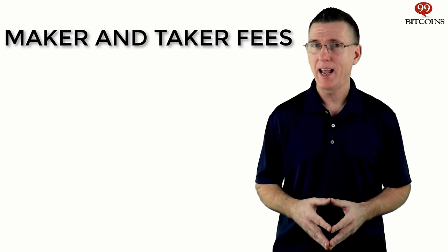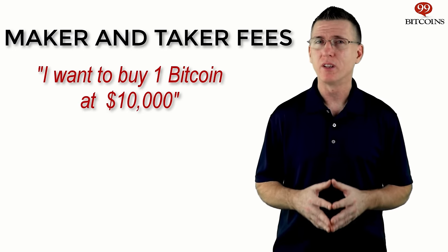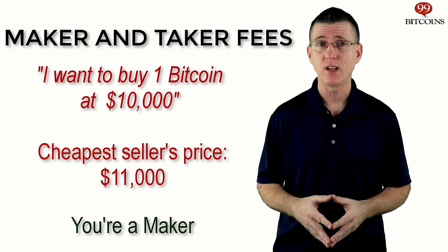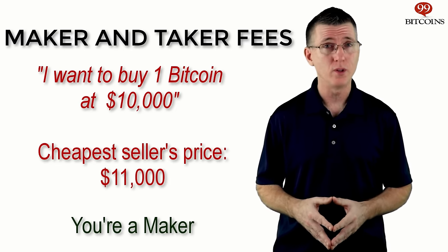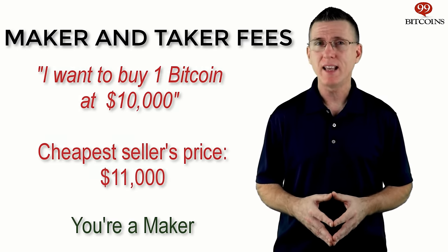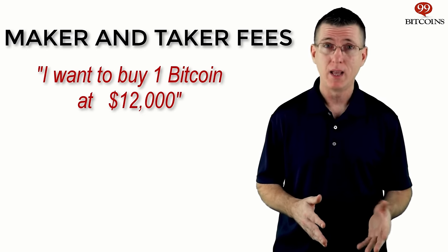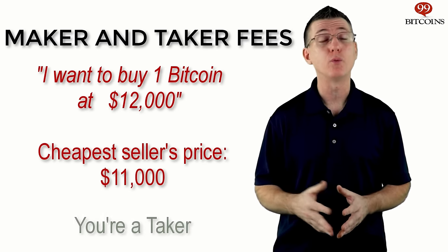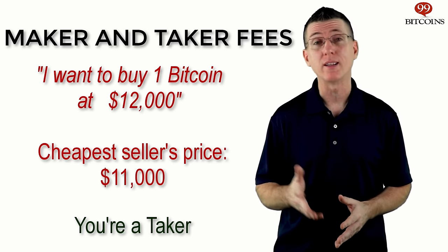For example, perhaps you put a limit order in to buy one Bitcoin at $10,000 at most, but the lowest seller is only willing to sell at $11,000. Then you've just created a new market for sellers who want to sell at $10,000. So whenever you place a buy order below the market price or a sell order above the market price, you become a market maker. Using that same example, if you place a limit order to buy one Bitcoin at $12,000 and the lowest seller is selling at $11,000, your order will be instantly fulfilled — you will be removing orders from the exchange's order book, so you're considered a market taker.